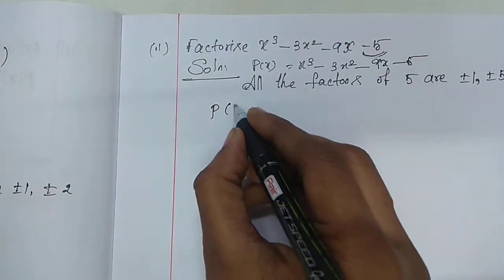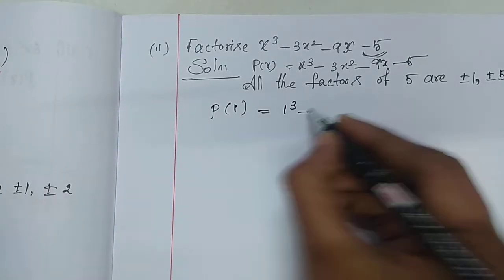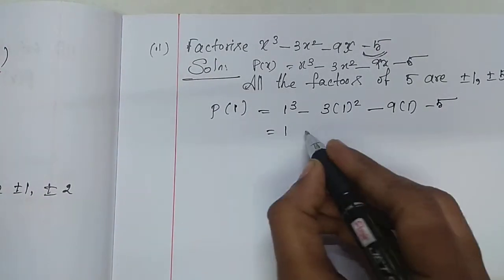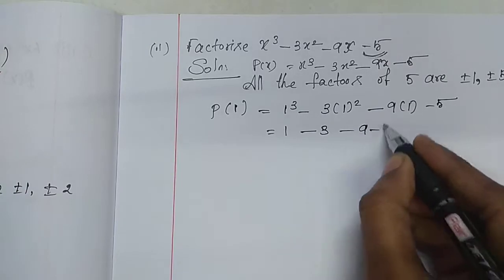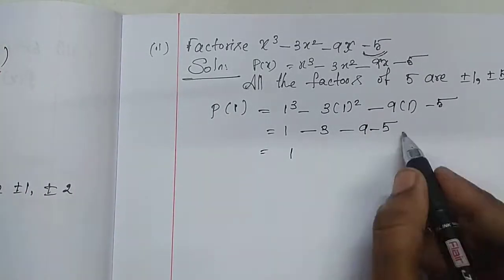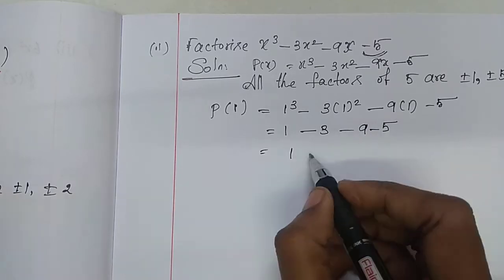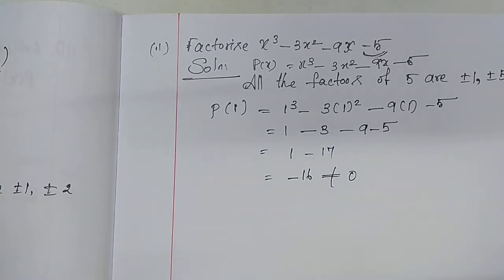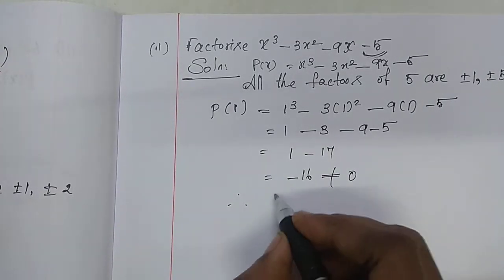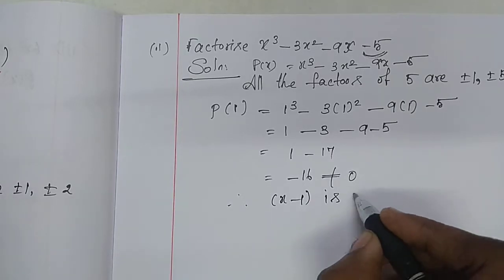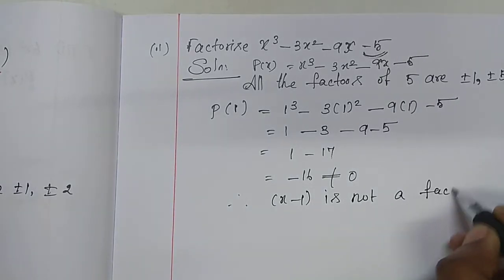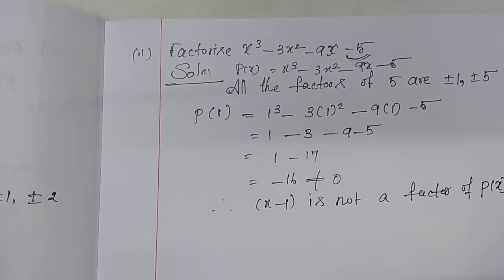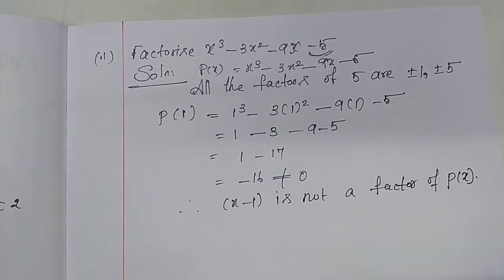First, try the number 1. P of 1 is equal to 1 cube minus 3 into 1 square minus 9 into 1 minus 5. So, 1 minus 3 minus 9 minus 5. Adding the three negative numbers, we get minus 17, and 14 minus 17 gives minus 16. This is not equal to 0. Therefore, x minus 1 is not a factor of the polynomial P of x.